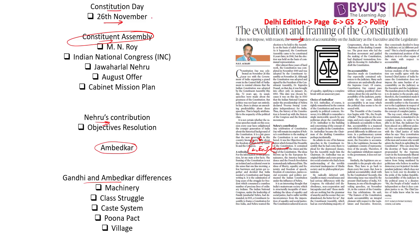The constitution of India is the lengthiest written constitution in the entire world. The constitution makers referred to multiple constitutions worldwide and imported what they felt was best into the Indian constitution. This did not happen in a single day, a week, a month, or even one year — it took almost three years and more to bring this massive document together, establishing institutions and embedding values.